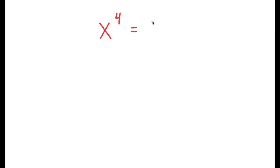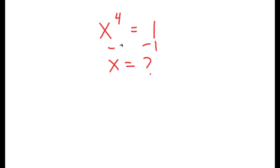In this video, I'm going to solve the equation x to the power of 4 is equal to 1. To solve this, I need to find the value of x. I'm going to subtract 1 on both sides, so I get x to the power of 4 minus 1 is equal to 0.